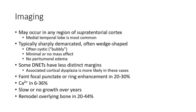Some DNETs have less distinct borders associated with cortical dysplasia, or ring enhancement in 20 to 30 percent. Calcification in 6 to 36 percent. Slow or low growth. Remodel their overlying bone in 20 to 44 percent.